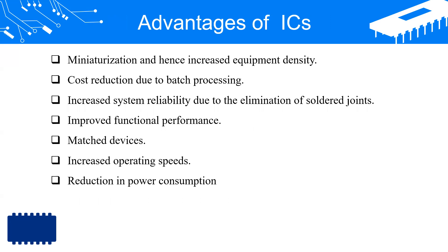ICs have many advantages. Practically, the size of an IC is a thousand times smaller than discrete circuits, which increases equipment density. In the olden days, all circuits would be made of wires on a breadboard or PCB board, so the circuit size would be very much larger. But practically, this size is changed into a compact size in the IC period.